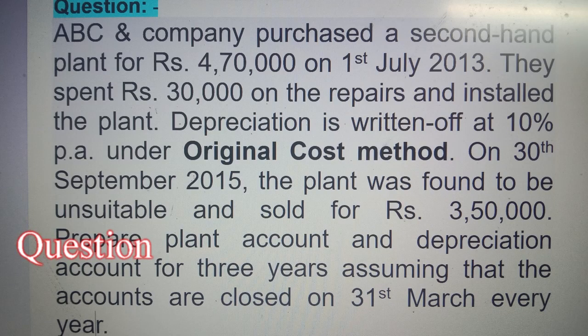ABC and Company purchased a second-hand plant for Rs 4,70,000 on 1st July 2013. They spent Rs 30,000 on repairs and installed the plant. Depreciation is written off at the rate of 10% per annum on the original cost method, which is another name for the straight line method. On 30th September 2015, the plant was found to be unsuitable and sold for Rs 3,50,000. Prepare a plant account and depreciation account for 3 years, assuming that the accounts are closed on 31st March every year.